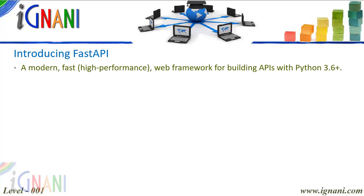FastAPI is a modern, fast, or high-performance web framework for building APIs with Python 3.6 and above. It's one of the fastest Python frameworks available as measured by independent benchmarks. It is based on standard Python type hints, so using them you can get automatic data validation, serialization, and documentation — including deeply nested JSON documents. You also get code completion and validation on some popular editors.